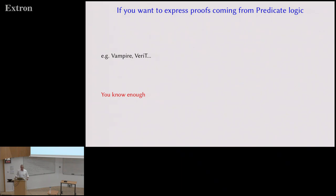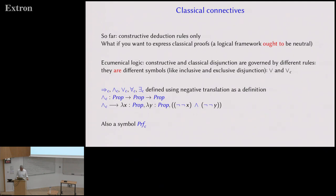We picked one — if you don't like it you can do it a different way. We picked one where you see that we put the negation down from the connective, so there is no 'not not' in front. This is why we did this. We should go to an ecumenical logic conference to discuss these issues; we just pick one.